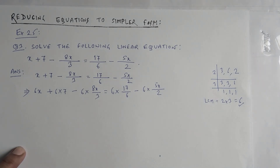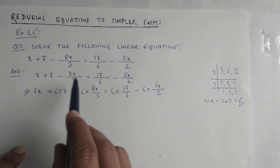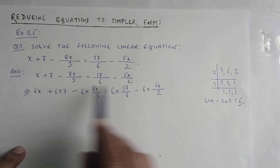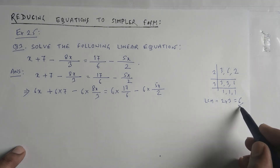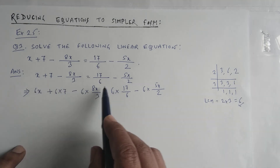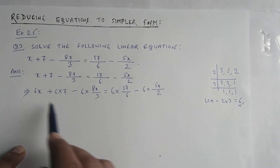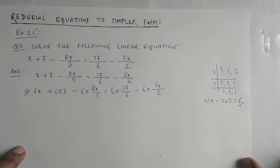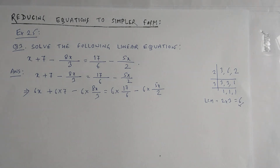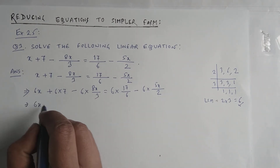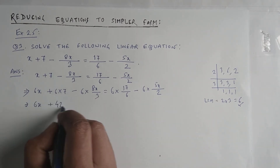The key step here is to multiply each term in the given equation by the LCM of the denominators, which is 6. We multiply x, then 7, then 8x by 3, then 17 by 6, and 5x by 2 individually by 6. You will find that the equation converts to a very simple form.